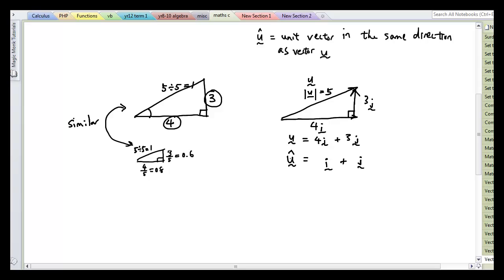So the unit vector of u is 4 divided by 5i plus 3 divided by 5j. And look what I have done here. I have divided each of these sides by the magnitude of my vector. So I'm going to go 4 divided by 5i plus 3 divided by 5j. So that's how you define a unit vector in the direction of your vector.